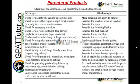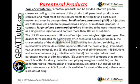Parenteral products are classified into two types: small volume parenterals and large volume parenterals, based on their volume. Small volume parenterals or injections have a maximum volume of less than 100 mL, and they are provided in single and multiple dose containers.